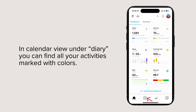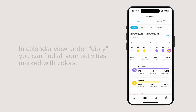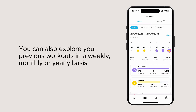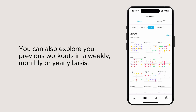In calendar view under diary, you can find all your activities marked with colors. You can also explore your previous workouts on a weekly, monthly, or yearly basis.